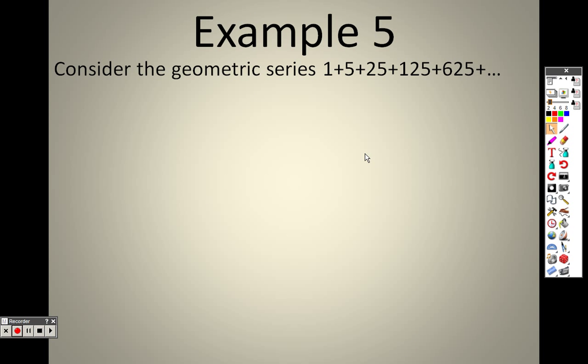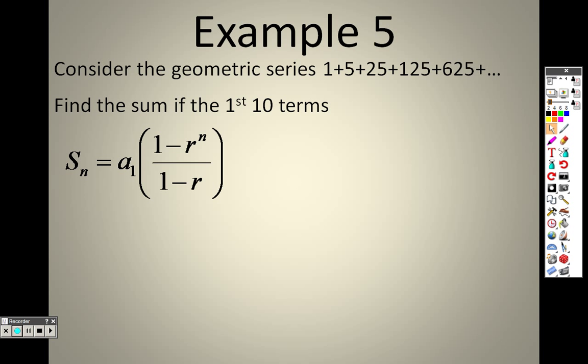When we take a look at example 5, there is our formula and I need to see if it is a geometric sequence first. 5 divided by 1 is 5, 25 divided by 5 is 5, 125 divided by 25 is 5, 625 divided by 125. So I figured out that it is geometric and r equals 5, right? That's basically what I was doing there, trying to figure out what r is.